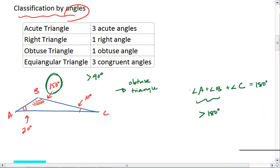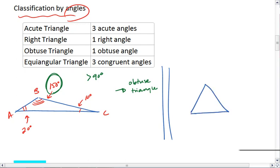And lastly, if we have a triangle where all three angles are congruent, so we have angle D congruent to angle E congruent to angle F. This actually means that they're all 60 degrees. Then this triangle is called an equiangular triangle.